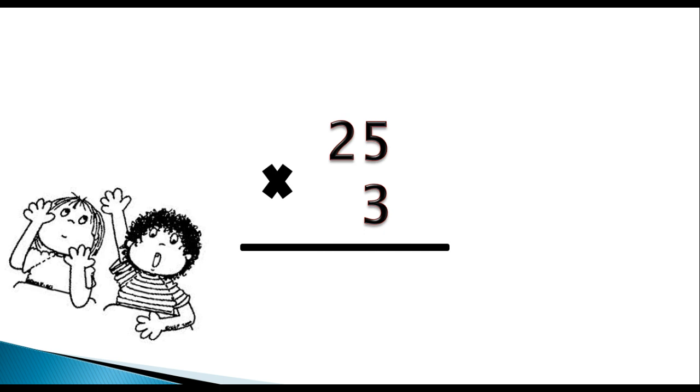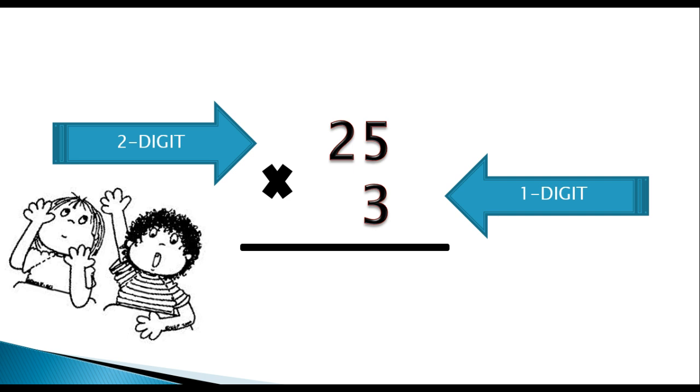We see a 2-digit by 1-digit problem here. The 2-digit number is at the very top, the 25, as you can see the arrow. The 1-digit number is at the bottom. Notice how we set up the problem. Our 1's place are lined up nicely in the 1's column, and our 10's place are lined up nicely in the 10's place. Now, this problem is set up perfectly for the standard algorithm of multiplication. So let's begin, ladies and gentlemen. Step number 1. What do we do first? Here we go.